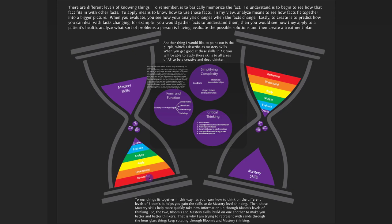There are different levels of knowing things. To remember is to memorize a fact. To understand is to see how facts fit with other facts. To apply means to know how to use those facts. Bloom's Taxonomy has many levels with different associated verbs — you can look those up. Learning is not just memorizing facts. To analyze means to see how facts fit together into a bigger picture — you have to see the forest from the trees, because in medicine one little fact can change the big picture. To evaluate is to see how your analysis changes when facts change.